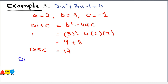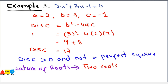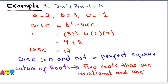The discriminant is 17, which is greater than zero but not a perfect square. As discussed in our previous lecture, when the discriminant is greater than zero and not a perfect square, the nature of the roots will be two roots that are irrational and unequal.